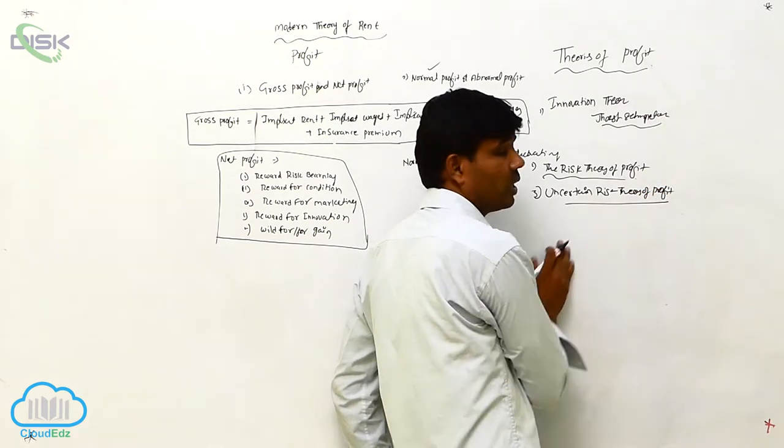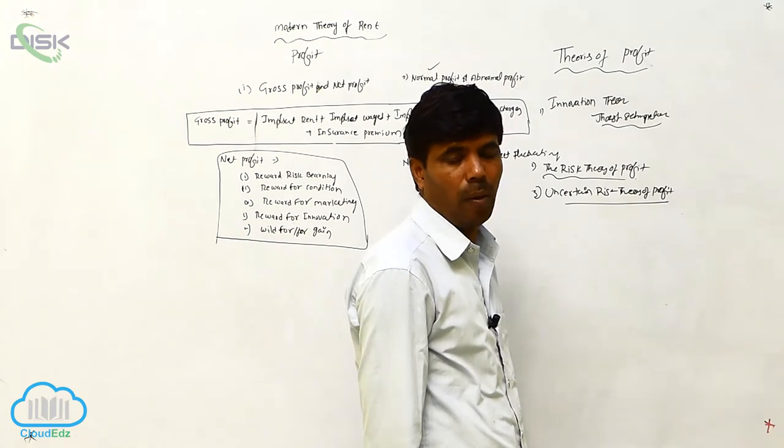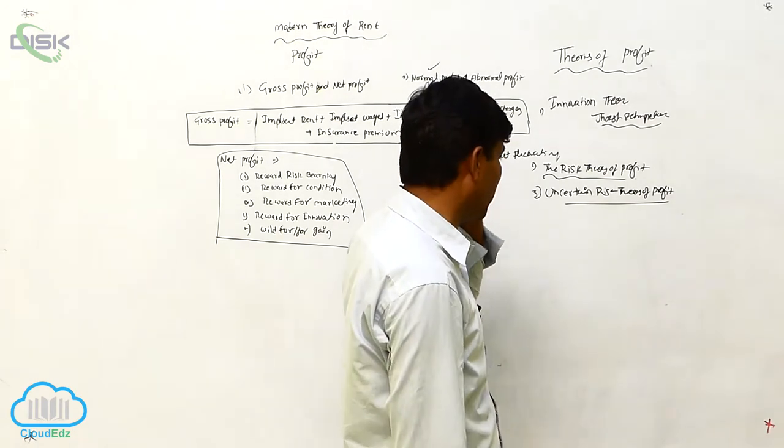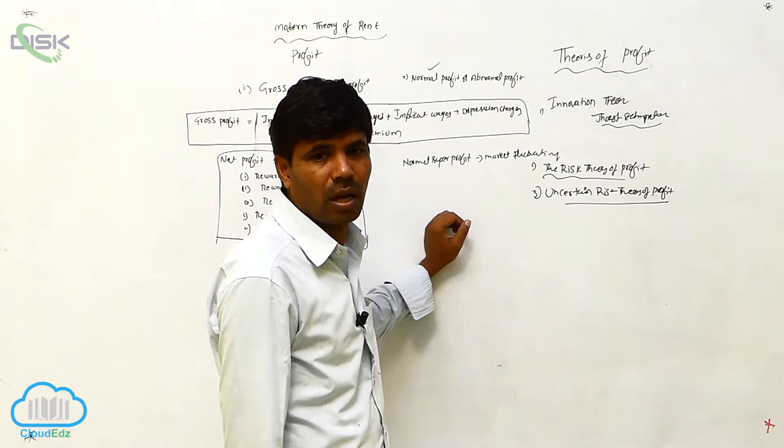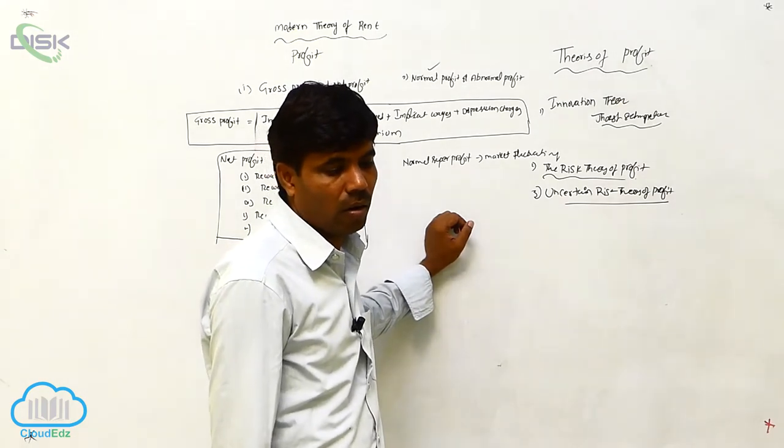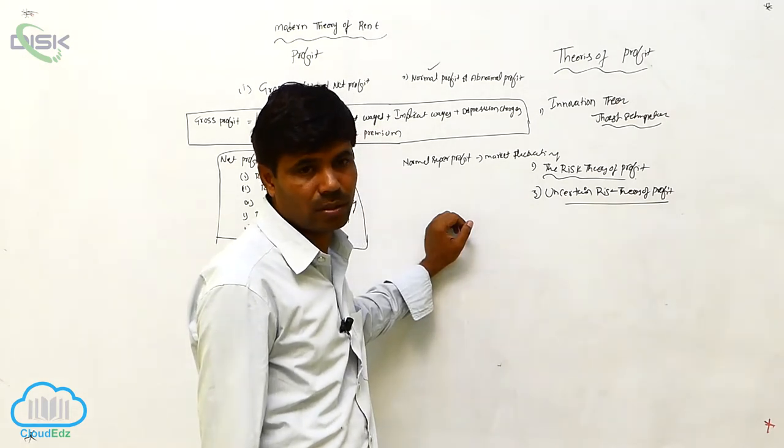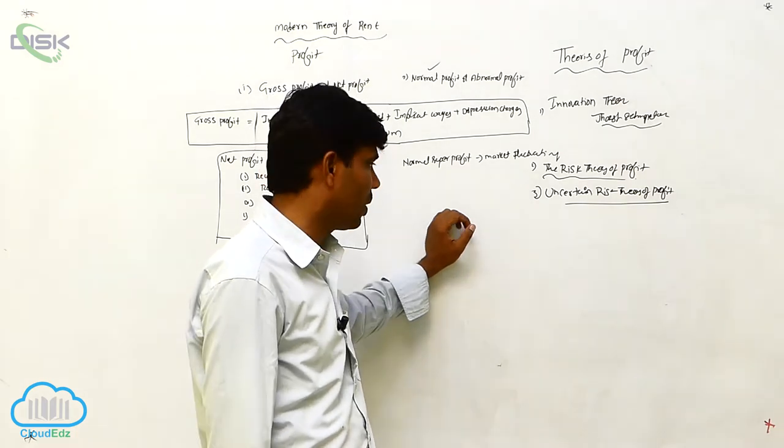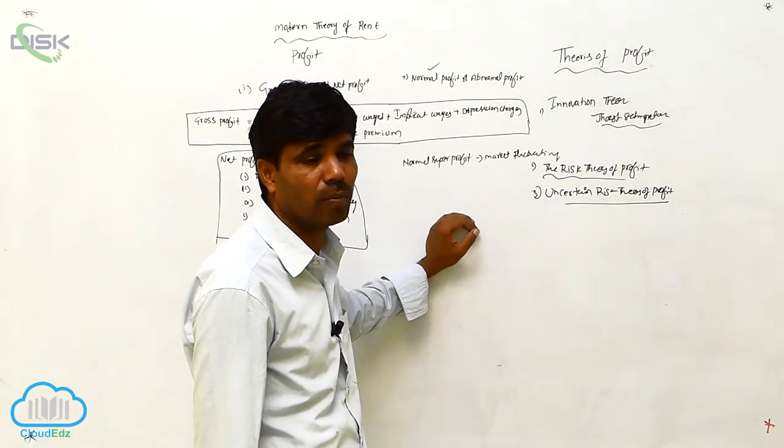This kind of theory is explained by Knight. Uncertainty theory deals with unfortunate things that happen, like fire accidents, theft, natural climates, unexpected fires and accidents. These situations arise from the uncertainty risk theory of profit.